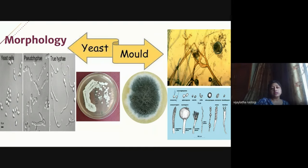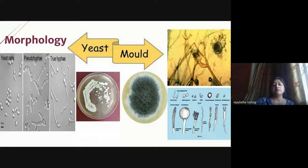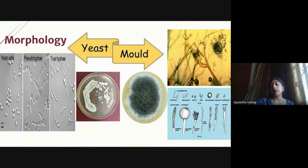To diagnose fungi in the laboratory, we must understand how they look. Classically, fungi exist as yeast and mold forms. Yeast forms are round, oval, or spherical. When they elongate, they form pseudohyphae—short sausage-shaped elongated structures. They can also form true hyphae: elongated filamentous structures that can be branched, unbranched, septate, or unseptate. Yeast colonies on plates appear pasty and creamy, ranging from off-white to cream, red, or orange.